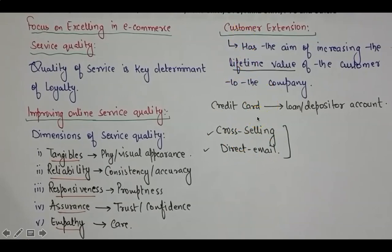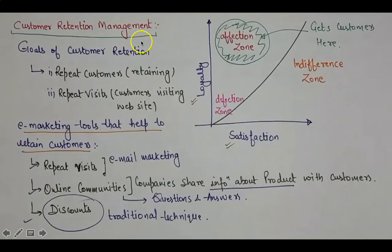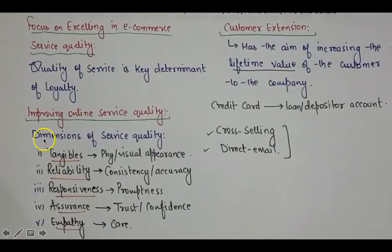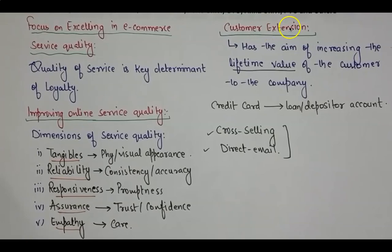So to summarize: we discussed Customer Retention Management and its graph, then improving online service quality and the five quality pillars, and finally Customer Extension - its definition and related techniques. That covers everything for today. Thank you so very much, and see you in the next lecture.